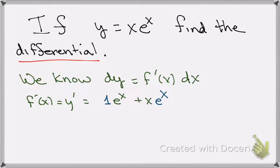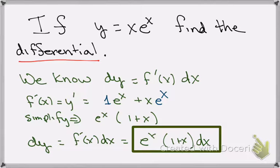And in this particular problem, we're going to use the product rule. So we get 1 times e to the x plus x times e to the x. We can simplify that, factoring out e to the x. And we get that that derivative f prime of x is e to the x times 1 plus x. Now we multiply the derivative times dx, and we get that the differential dy will be e to the x times 1 plus x dx.